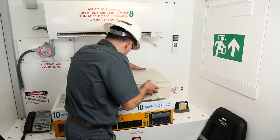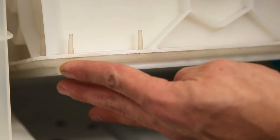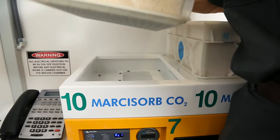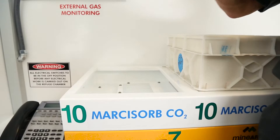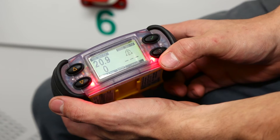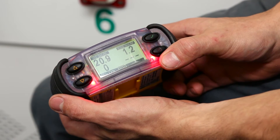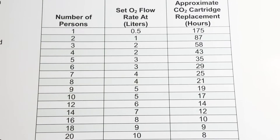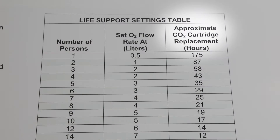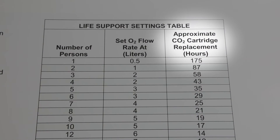The cartridges will slot into place with the rubber seal on the bottom side. Replace the cartridges when the gas monitor reads CO2 as being greater than 1%, or as indicated by the life support settings table located on the safe haven wall.